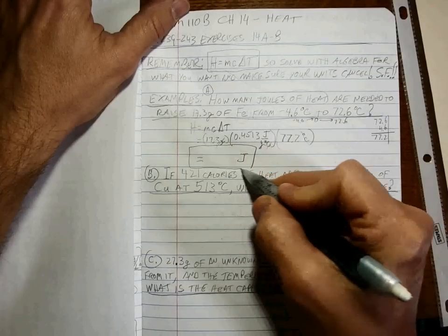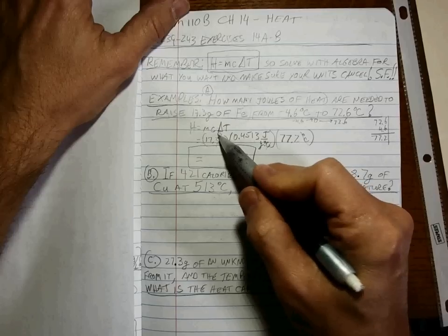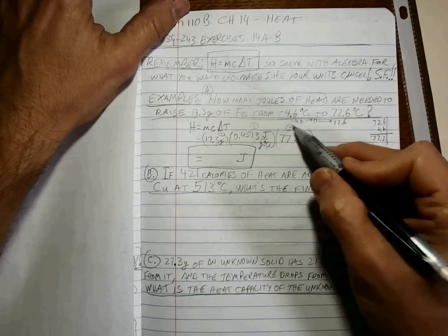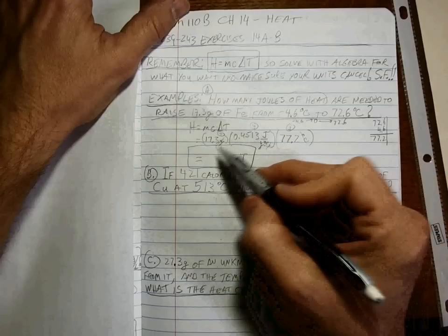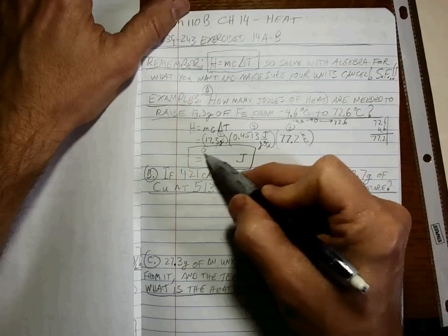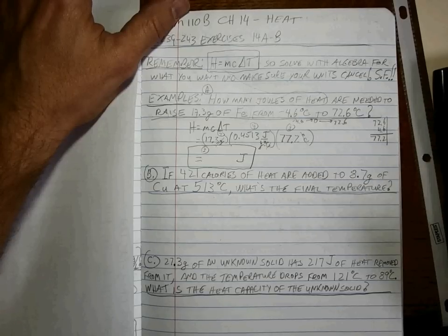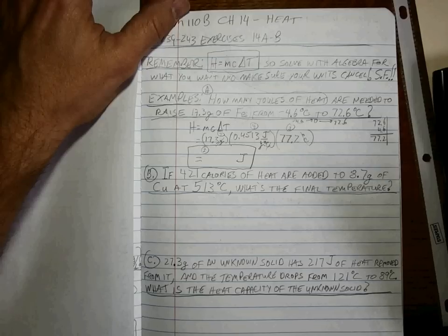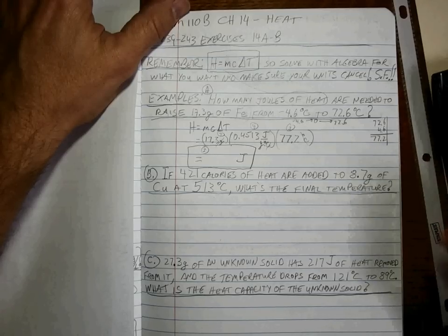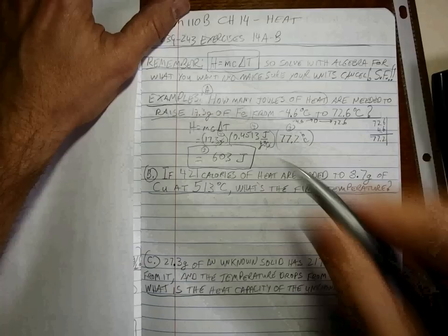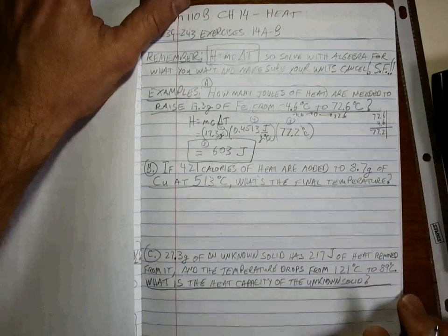Degree C cancels, grams cancel, you're left with joules. Three sig figs here, four sig figs here, three sig figs here, so even though that only has two sig figs, we need three in our answer. So if we multiply those three together, 17.3, I get 602.7 something, so 603 joules. That's the answer to that one.